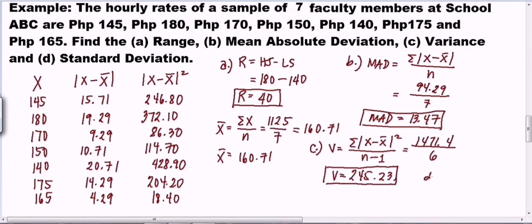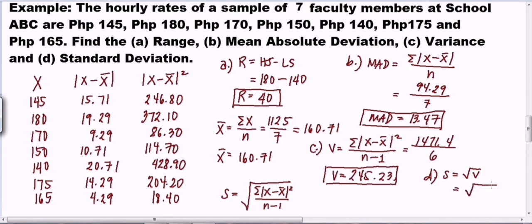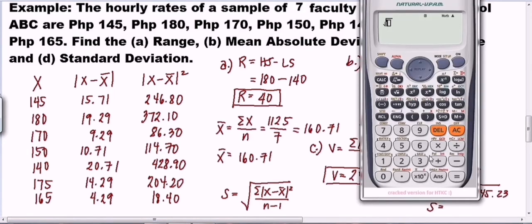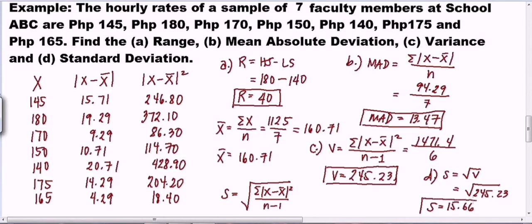The last measure is standard deviation, which is very simple — it is the square root of the variance. The formula is the square root of the summation of (X minus mean) squared over n minus 1, which is just what we computed as variance. So we take the square root of 245.23, and the standard deviation is 15.66. That is how you get the measures of dispersion of an ungrouped data.